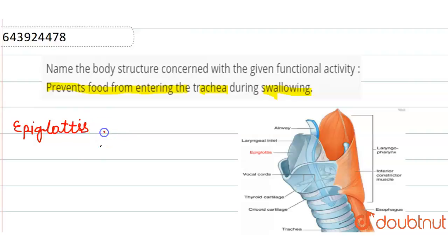Epiglottis is a protective layer, protective cover that covers the trachea.